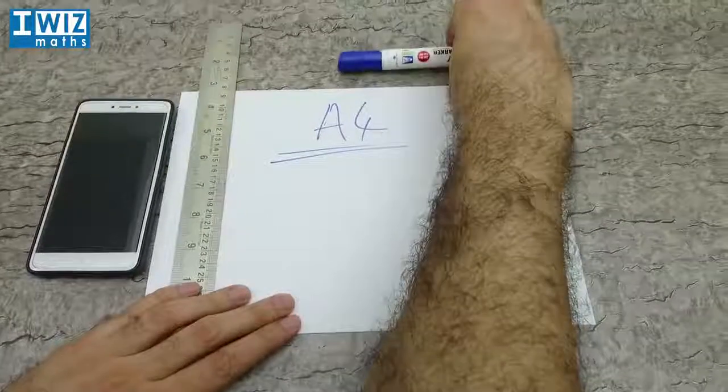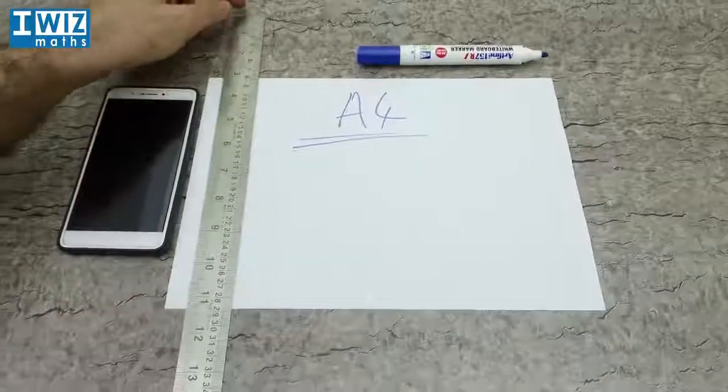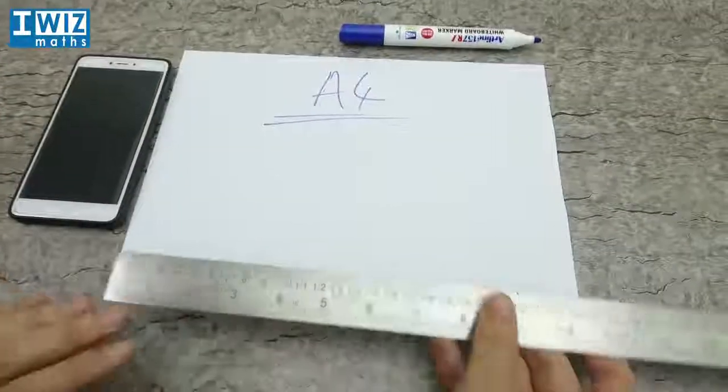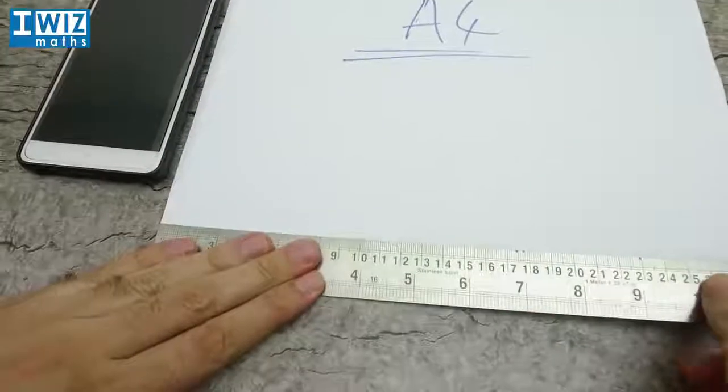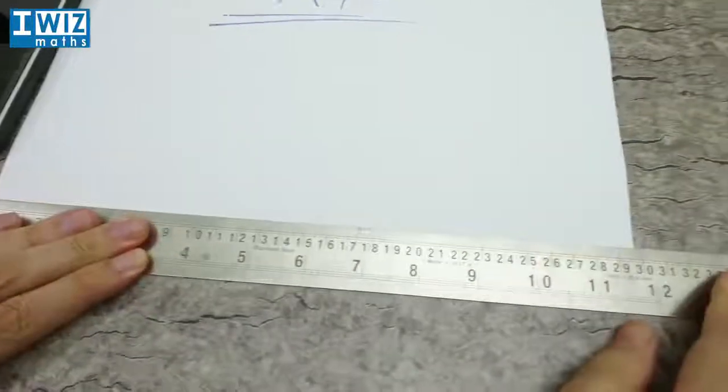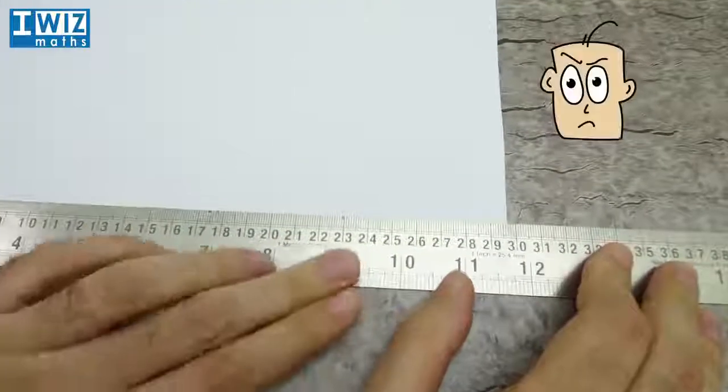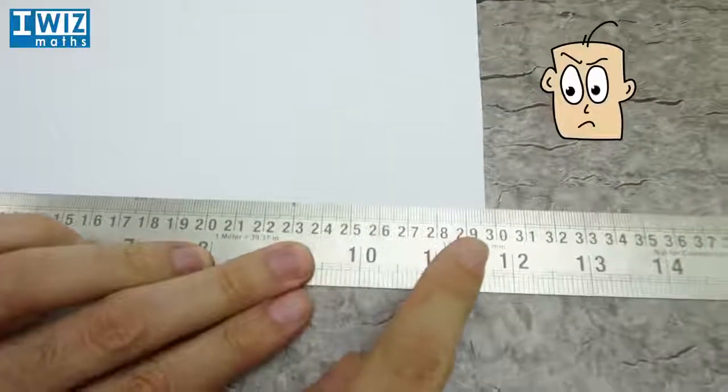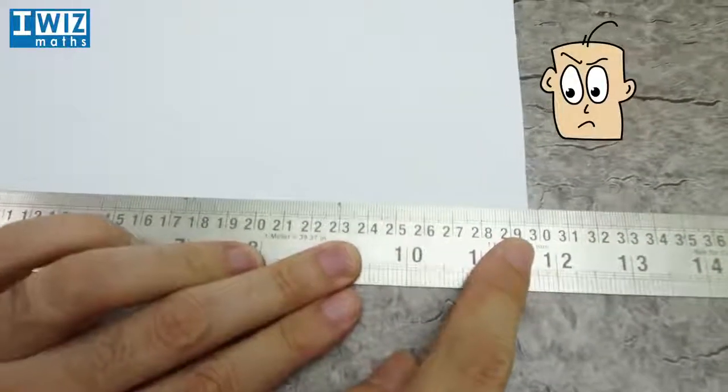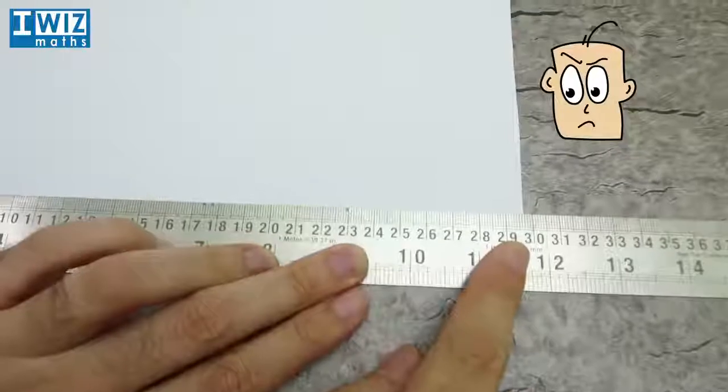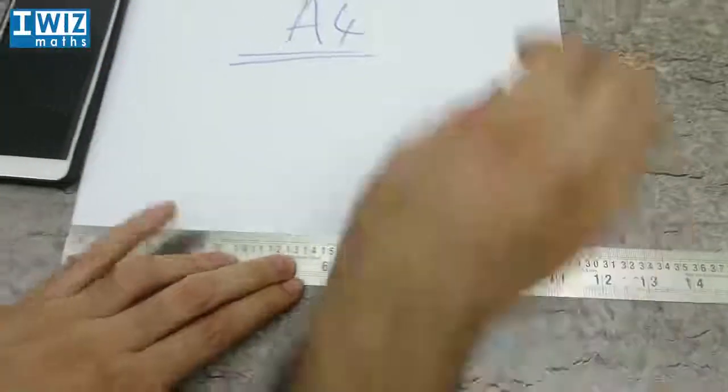Let's take some very simple measurements ourselves. Let's look at the measurement of this side. If we look carefully enough, that is 29.7.